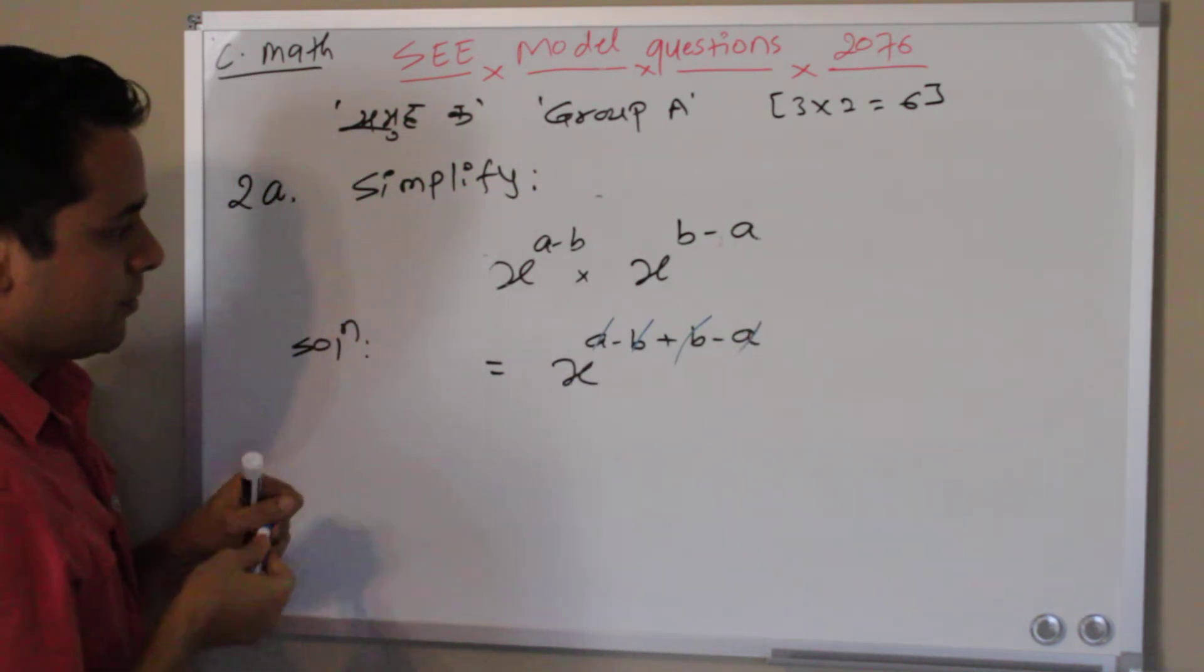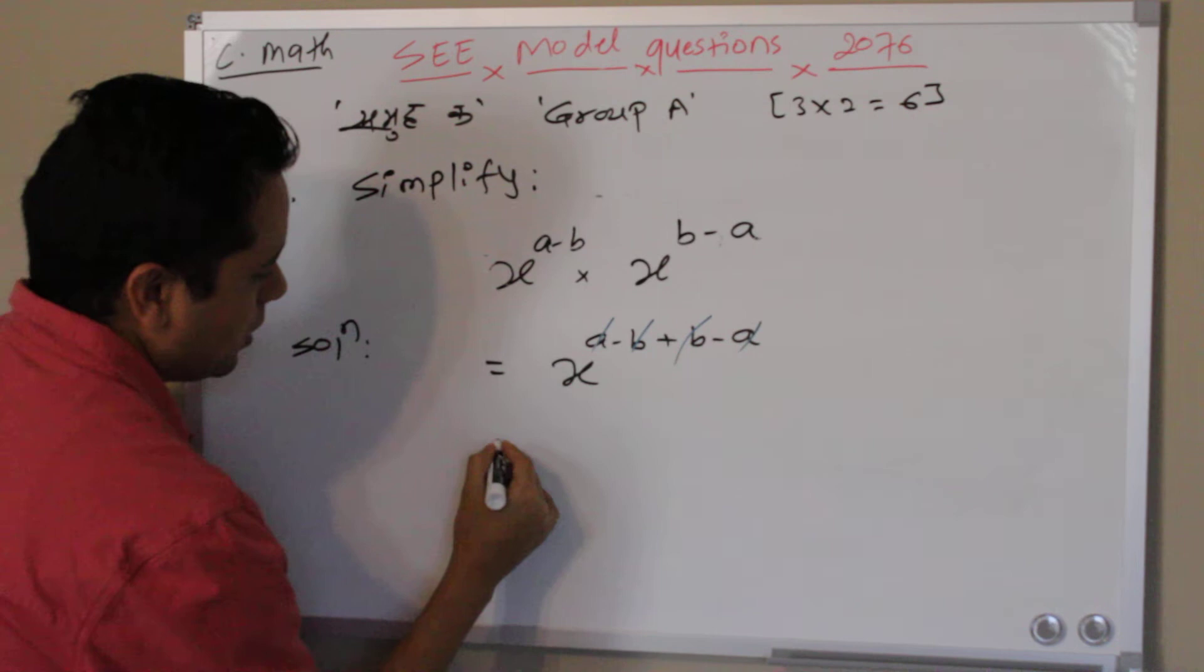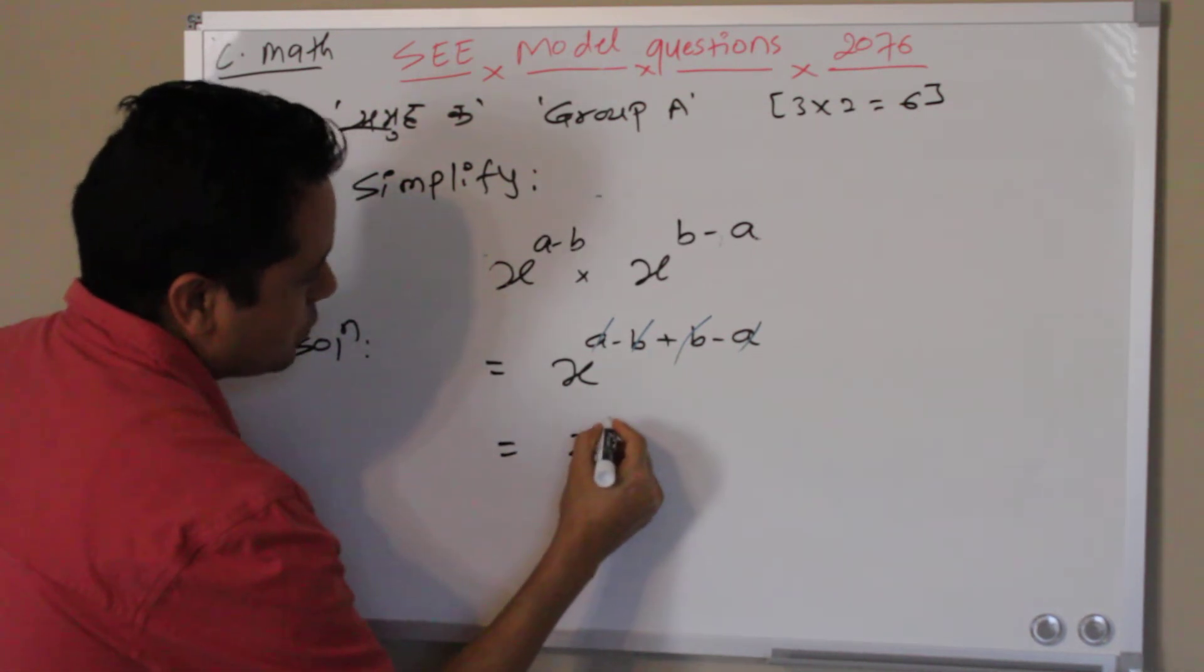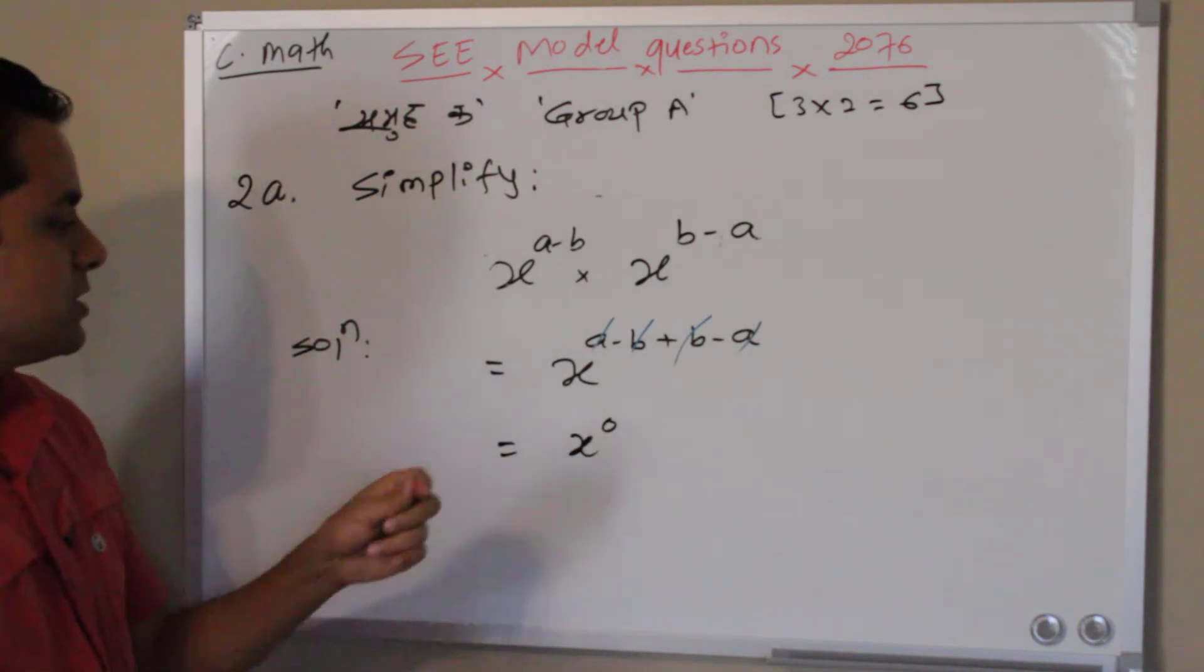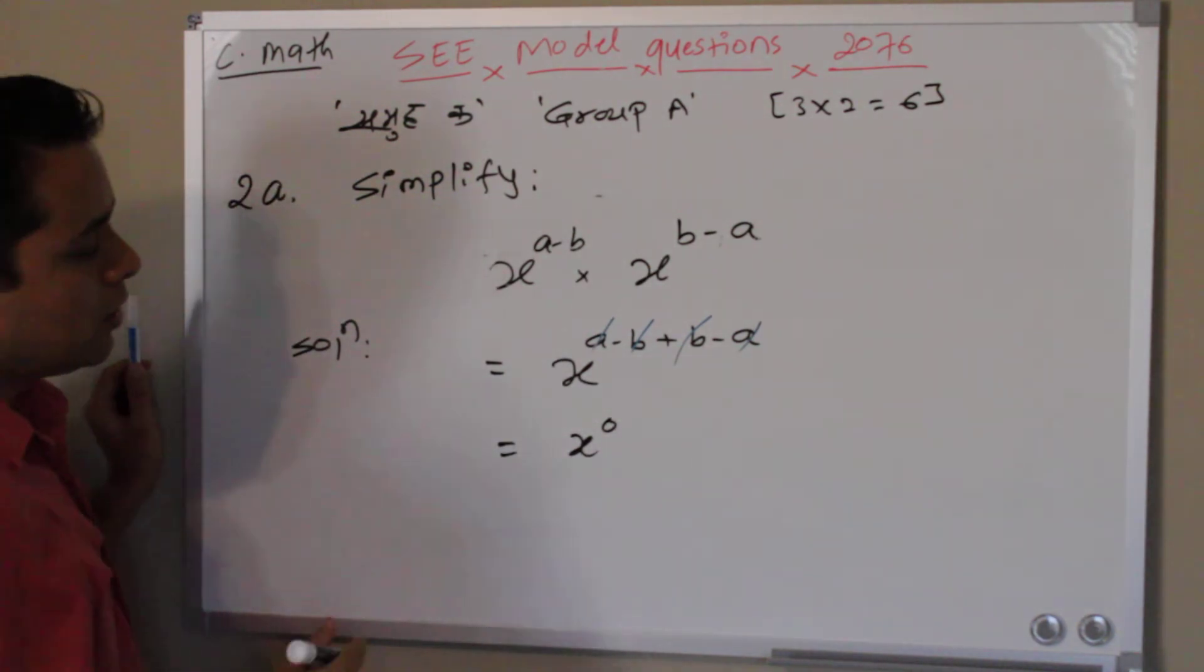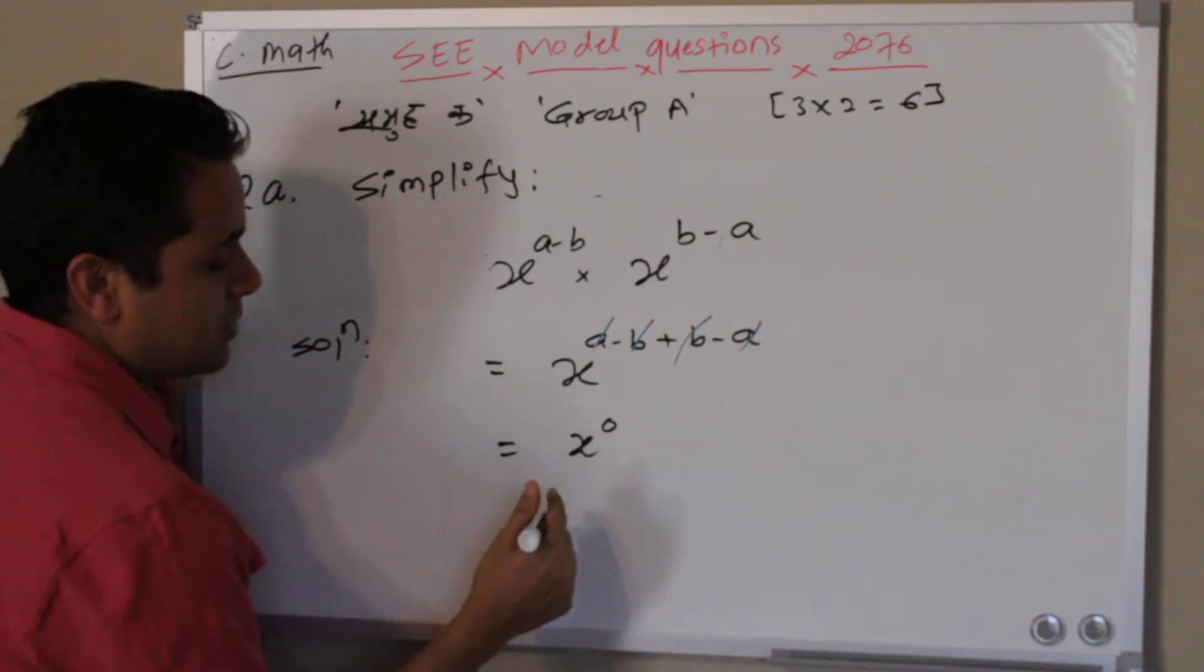Now leftover is x to the power 0 because a and a cancel, b and b cancel. There is nothing left, which is x to the power 0. Anything to the power 0 is 1.